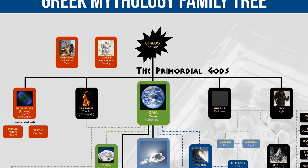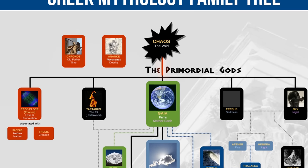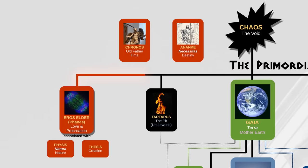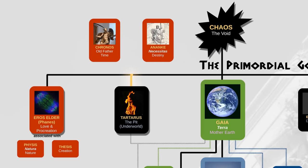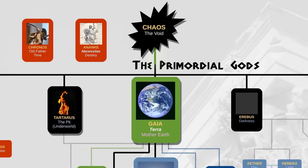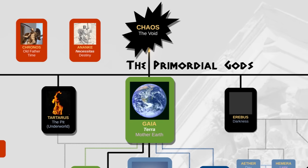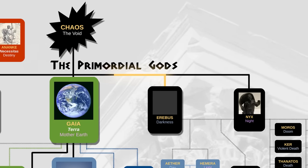We're going to start up here with the first generation of gods, the primordial gods, who according to some sources are said to have been born out of chaos. These include Eros Elder — not to be confused with the younger Eros whom the Romans called Cupid — then we have Tartarus, the original god of the underworld, Gaia, Mother Earth, the most important of the primordial gods, Erebus, god of darkness, and Nyx, god of night.